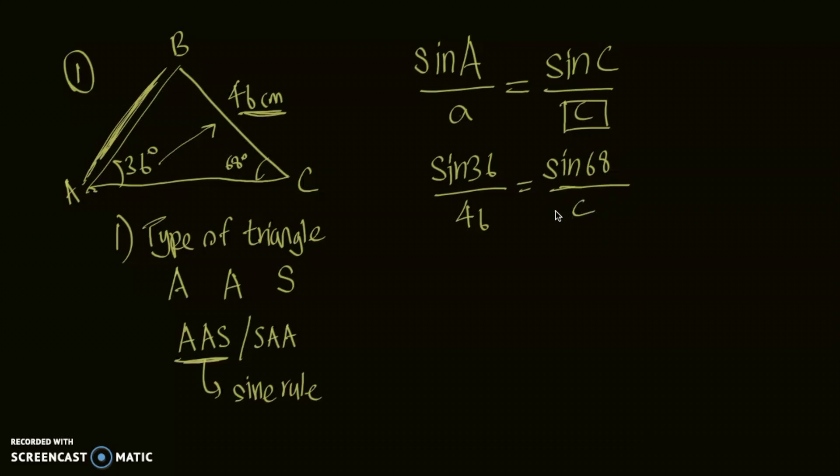So now let's do cross multiplication to leave c on one side. So it'd be c sine 36 is equal to 46 sine 68, which makes the side c is equal to 46 sine 68 over sine 36. So now let's plug that into our calculator.